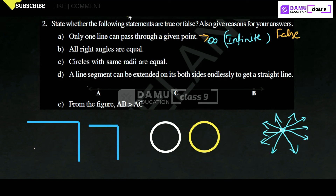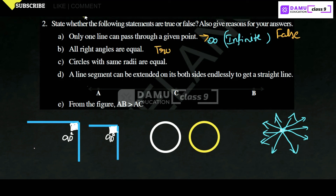Next: all right angles are equal. Let's take one right angle here and another right angle there. All right angles measure 90 degrees, so all right angles are equal. This statement is true.